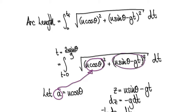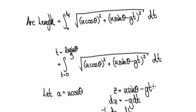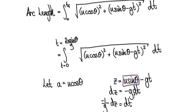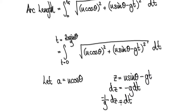And let this thing here be Z, so we can put Z in here, but we need the DT. Looking at this, this thing here is just a constant, so when you differentiate it with respect to time, it disappears, and it will just give you minus G here. Divide both sides by minus G, and that gives you DT equals this thing here.